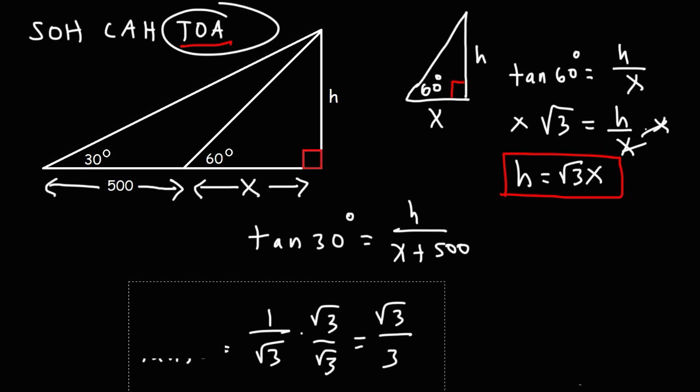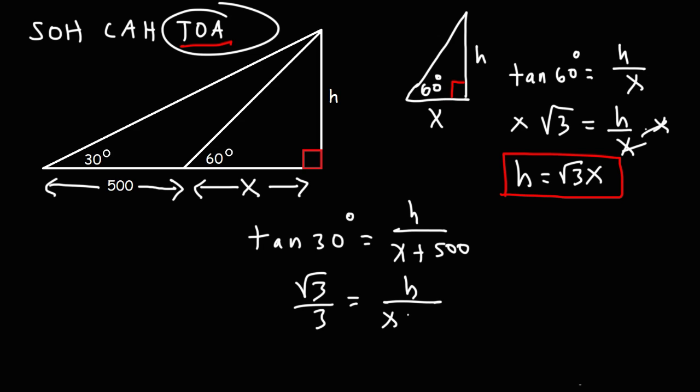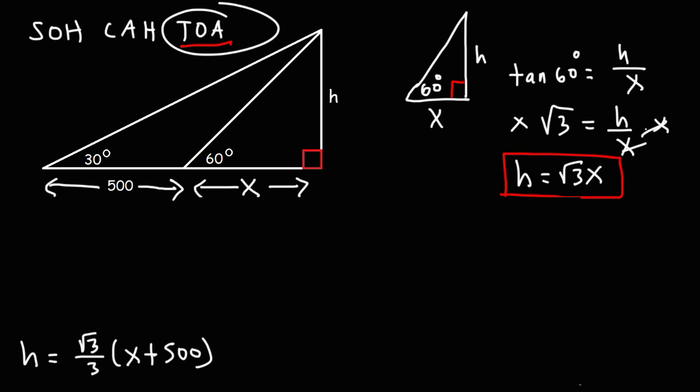Now I need some space to work. So this is what we have at this point. And that's equal to h over x plus 500. Now what I'm going to do is, to get rid of the fractions, I'm going to multiply both sides by x plus 500. Let's get h by itself. So we're going to have h is equal to the square root of 3 over 3 times x plus 500.